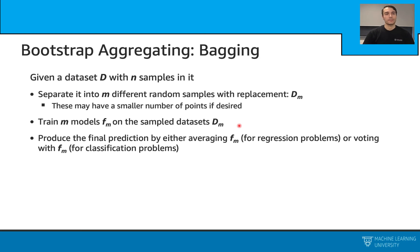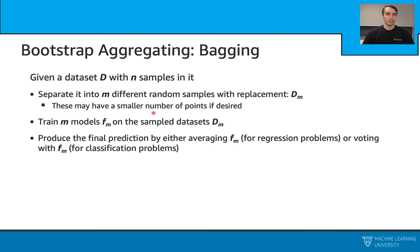Let's explain our algorithm. We start with a data set with n samples, then we apply bootstrapping. With bootstrapping, we separate this data set into m different random samples with replacements, which we will call the D_m's. These may have a smaller number of data points if desired. Afterwards, we train m models, f_m's, on these sampled data sets. To get the final predictions, we can either take the average for regression problems, or take the majority vote for classification problems.